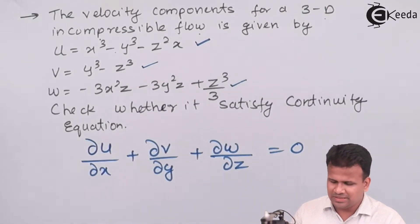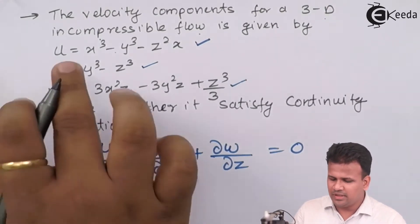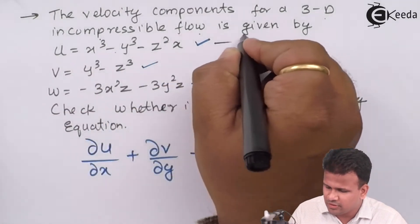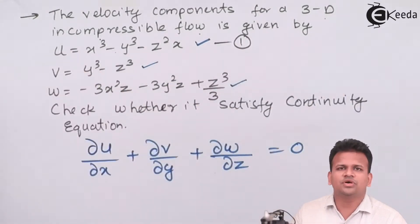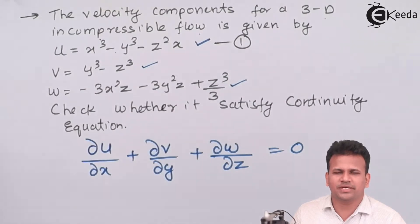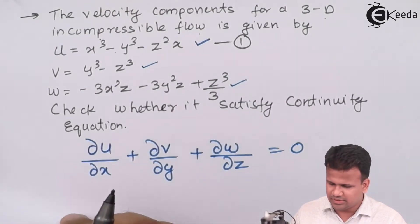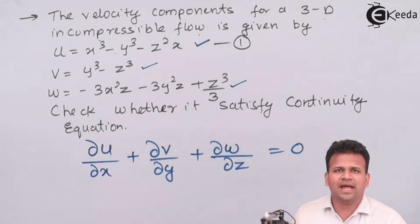Let us continue solving this. For equation number one, we take the velocity component along the x-direction and differentiate it with respect to x.